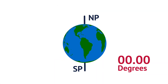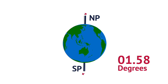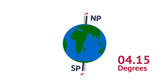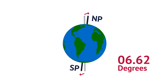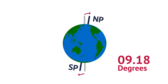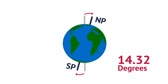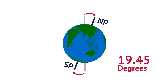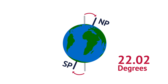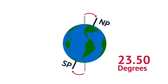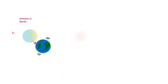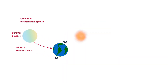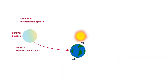Let's start with the basics. Earth spins on an axis that's tilted about 23.5 degrees, not straight up and down. This tilt, combined with Earth's year-long journey, or orbit, around the Sun, creates our seasons.